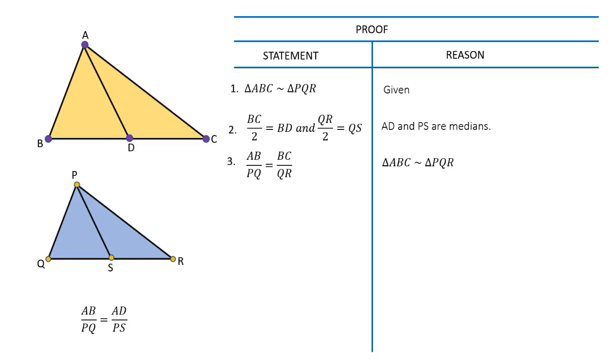On dividing numerator and denominator of the right-hand side of the above equation by 2, we get AB over PQ equals BD over QS from statement 2.